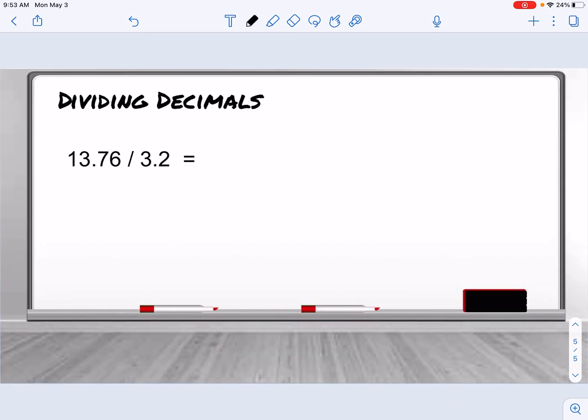With dividing decimals, we put the first number inside divided by the second number outside. And we look at the number on the outside. We have to make this a whole number, so I have to move the decimal once to the right.